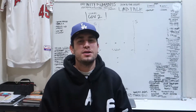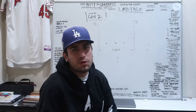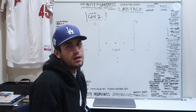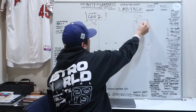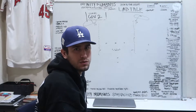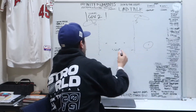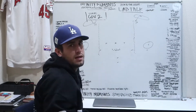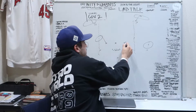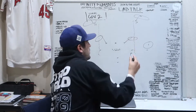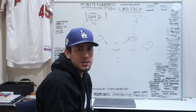Now let's dissect Cover 2 real quick. Pre-snap, the safeties usually line up around 12 to 14 yards off the hash — they each have half the field. The corners have the flats on both sides. Within the linebacker core, Will has hook-curl, Sam has hook-curl. Today we're going to talk about a Tampa 2 type coverage where the Mike drops into the middle of the field.